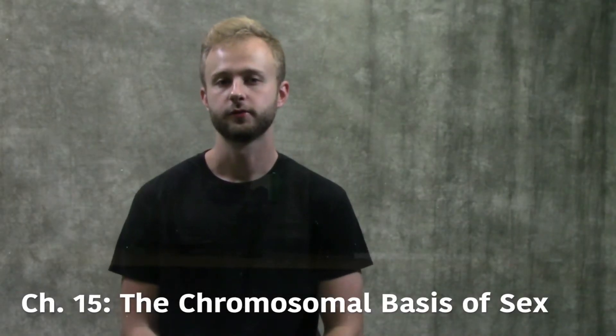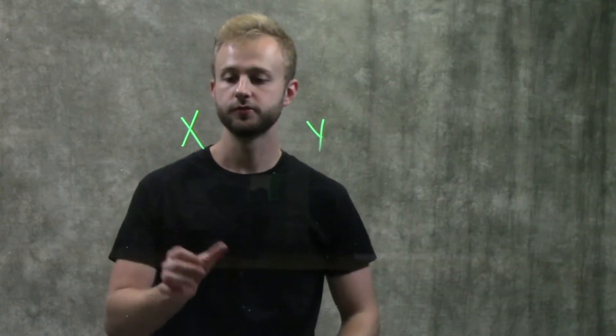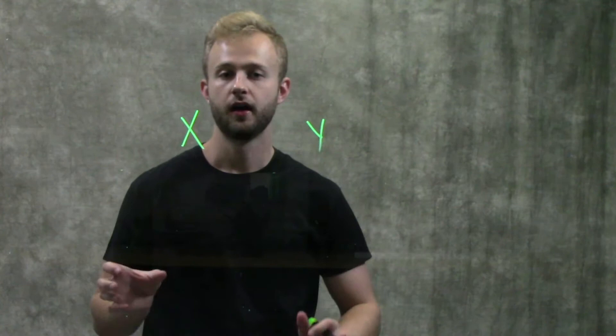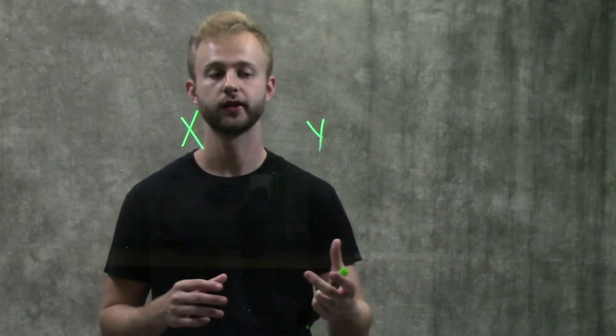This video is going to be about the chromosomal basis of sex. We know from a previous video that we have two sex chromosomes that an individual can have: the X chromosome and the Y chromosome. The X chromosome is going to be much bigger than the Y chromosome and contain a lot more genetic information than the Y chromosome does.